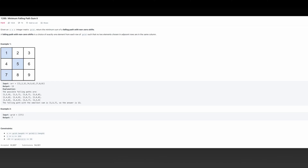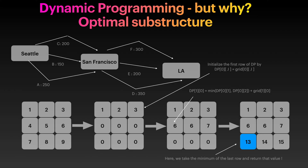I want you to pause this video, look at the problem, and see the examples. This problem is another dynamic programming problem. Why is this dynamic programming? What is the optimal substructure here? What do I mean by optimal substructure?